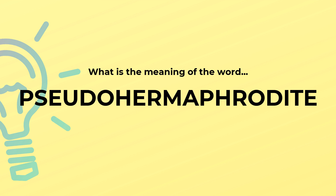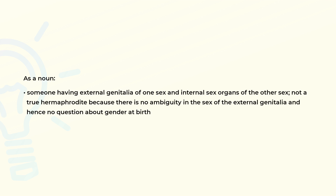What is the meaning of the word pseudohermaphrodite? As a noun, someone having external genitalia of one sex and internal sex organs of the other sex; not a true hermaphrodite because there is no ambiguity in the sex of the external genitalia and hence no question about gender at birth.